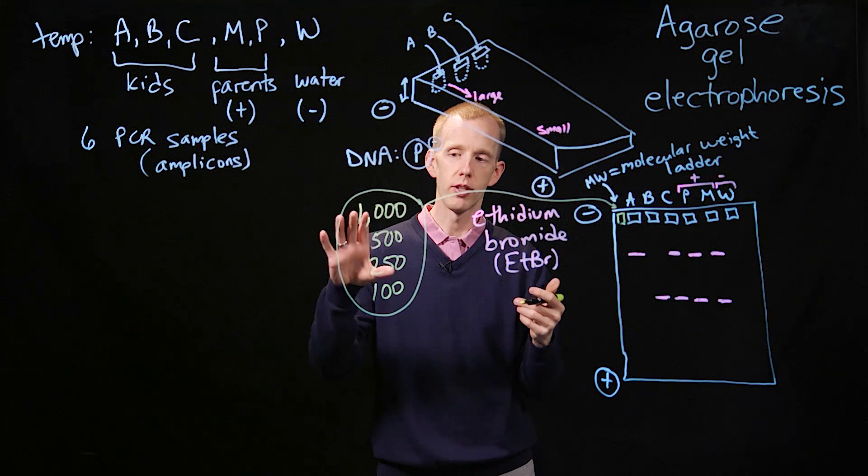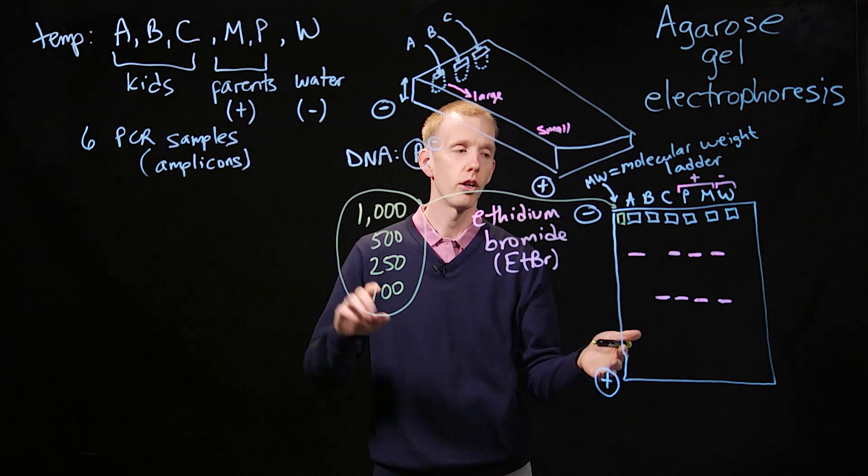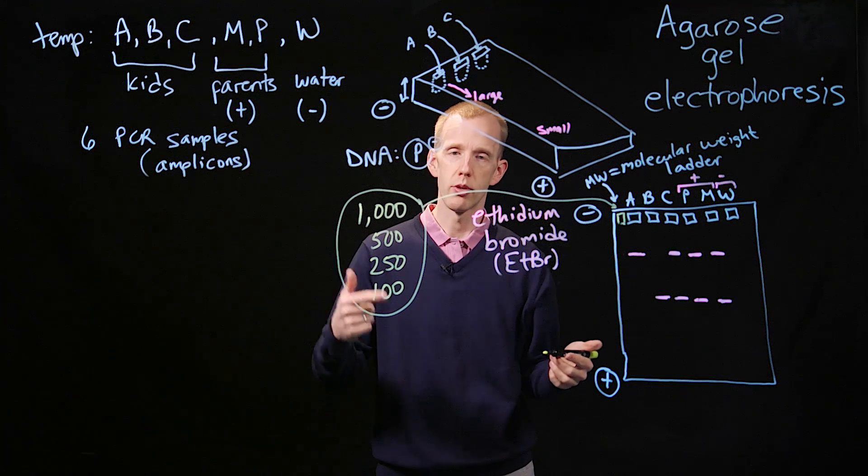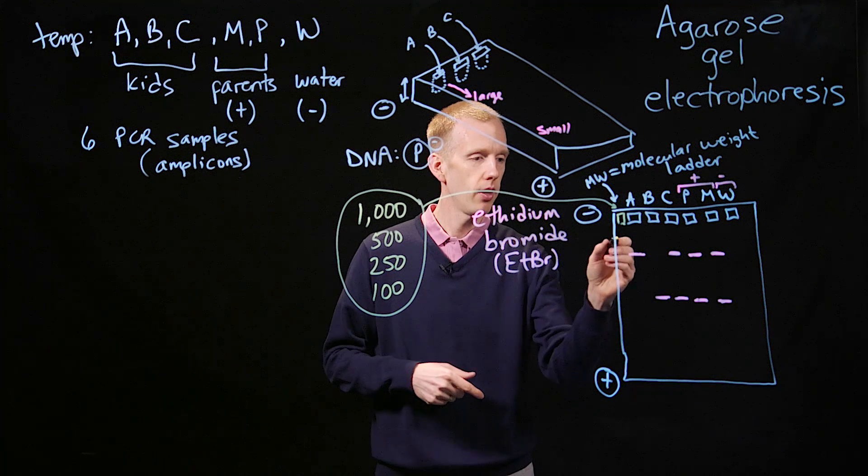We put those all in one tube, and we add that sample into that well of the agarose gel. So when we electrophorese this sample, applying an electric current, we should see one, two, three, four bands. And indeed we do.